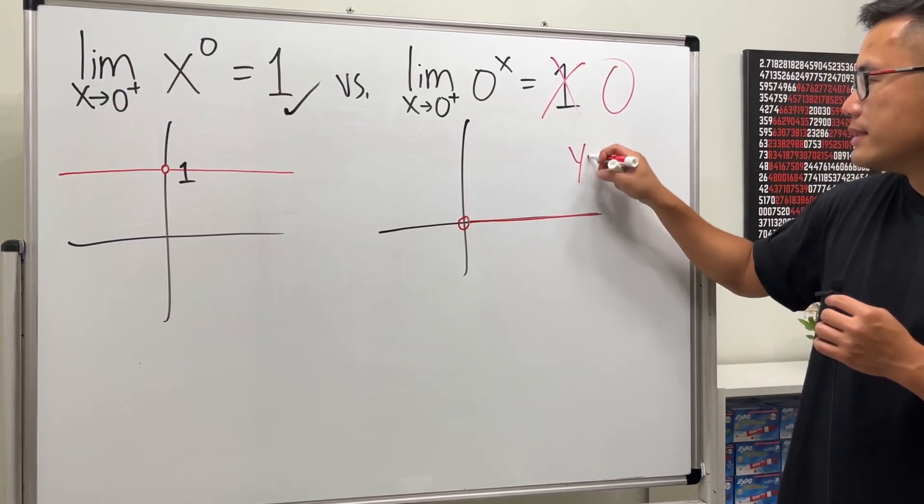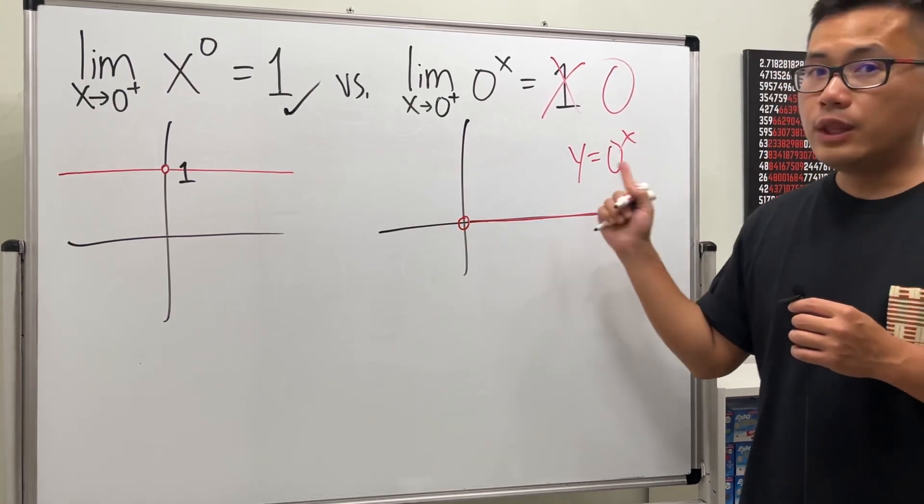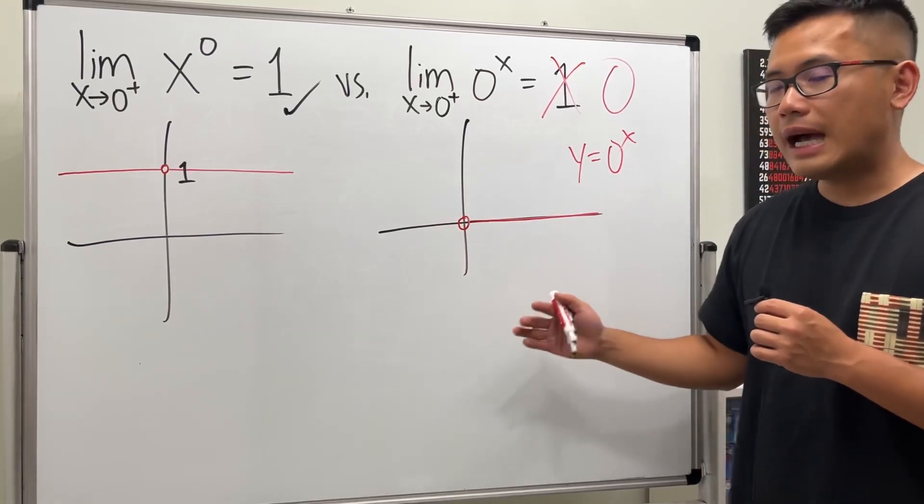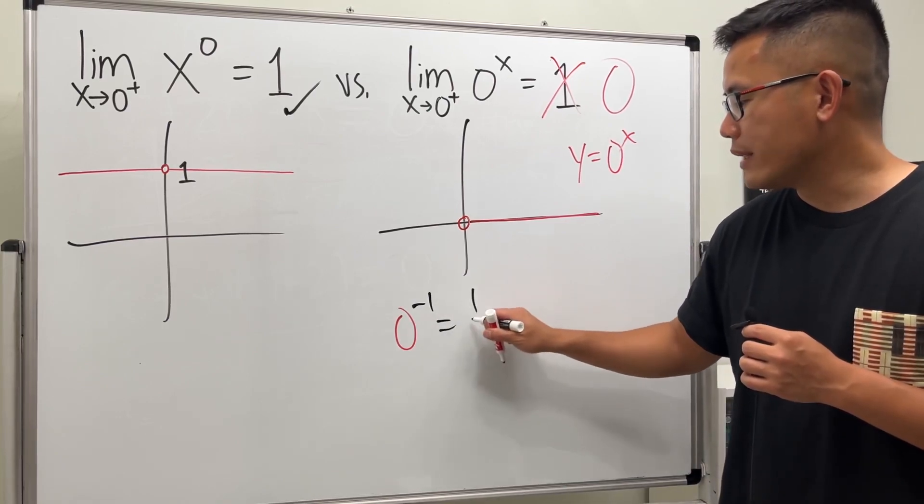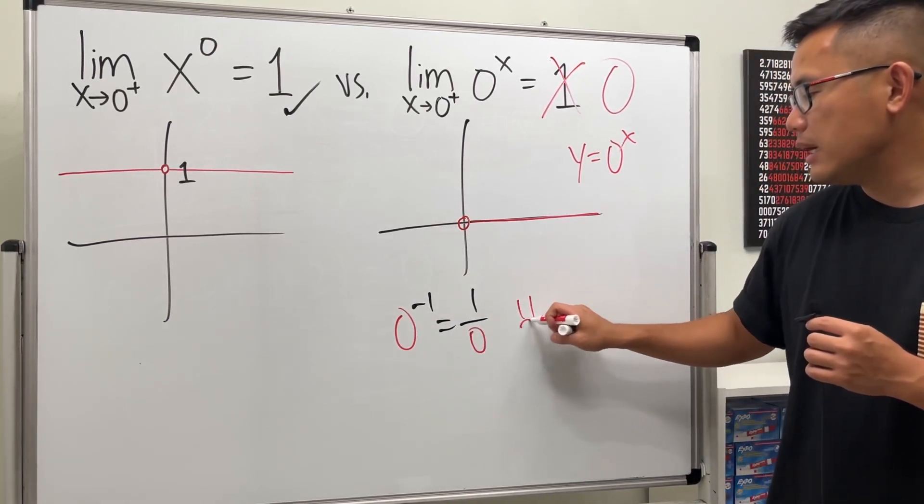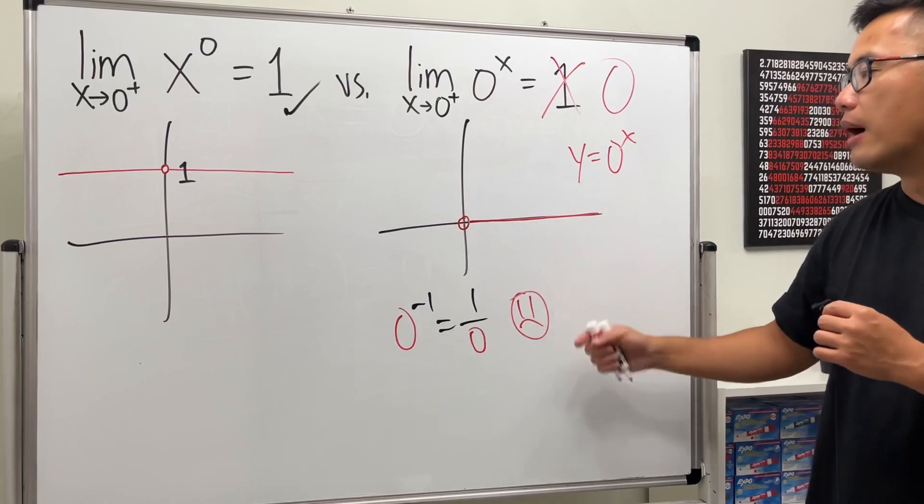This is when y is equal to zero to the x power. And notice x cannot be equal to a negative number, because otherwise, for example, zero to the negative one power, this is going to give us one over zero, and that's going to be undefined.